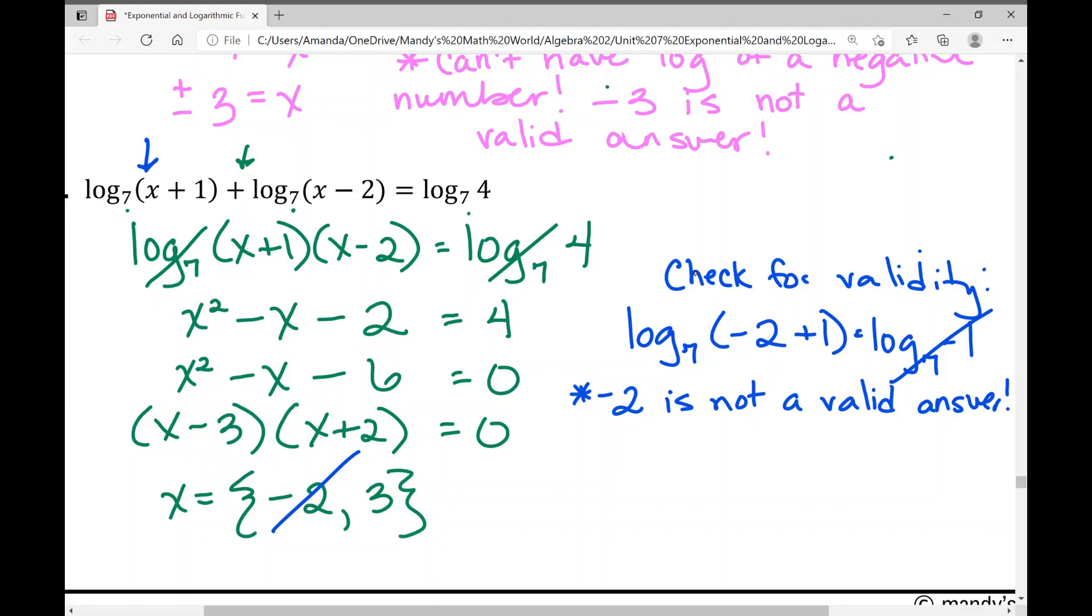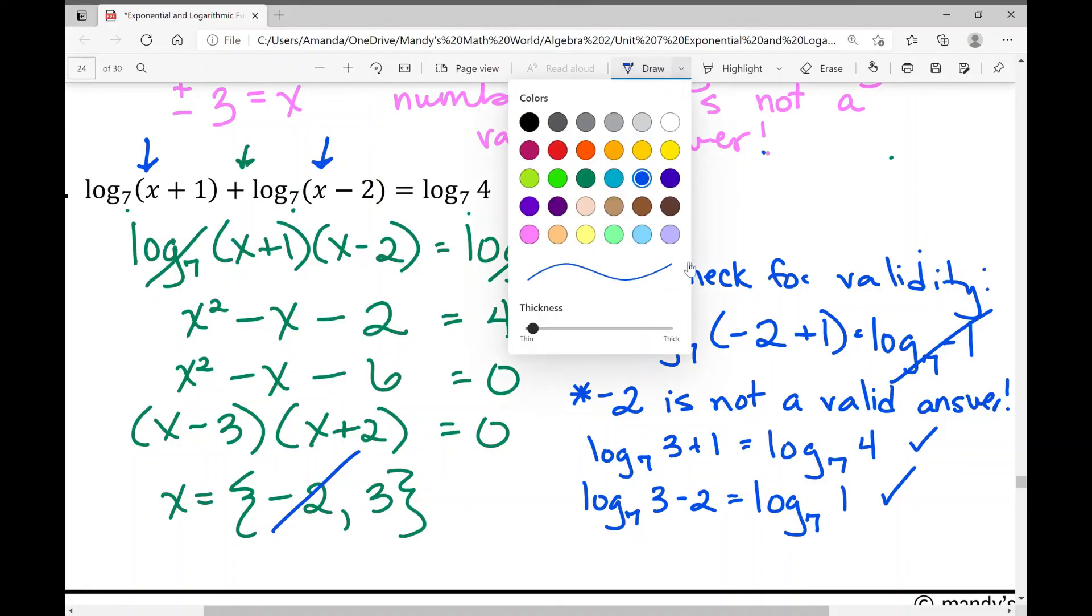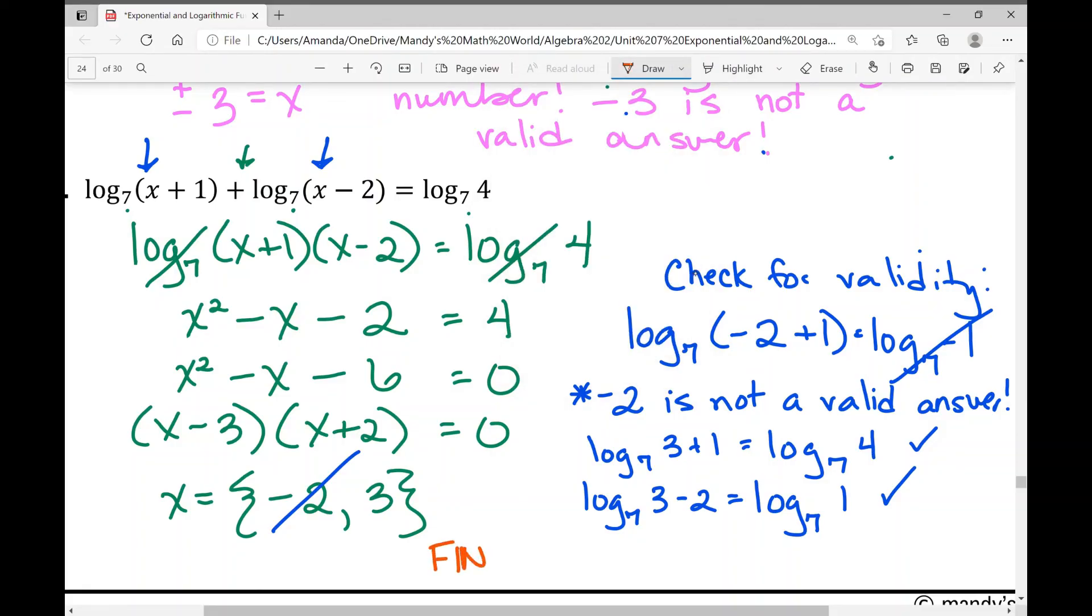If I plug in positive 3 into the first one, log base 7 of 3 plus 1 equals log base 7 of 4. That works. Let's look at the second one. Log base 7 of 3 minus 2 equals log base 7 of 1. That works. So your final answer is x equals 3. We checked the validity of it, and it works.